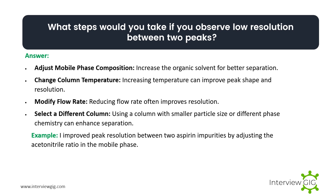What steps would you take if you observe low resolution between two peaks? Adjust mobile phase composition — increase the organic solvent for better separation. Change column temperature — increasing temperature can improve peak shape and resolution. Modify flow rate — reducing flow rate often improves resolution. Select a different column — using a column with smaller particle size or different phase chemistry can enhance separation. Example: I improve peak resolution between two aspirin impurities by adjusting the acetonitrile ratio in the mobile phase.